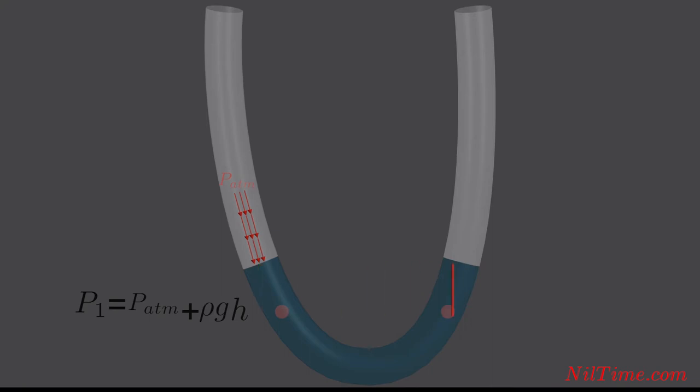The same principle applies to the right side of the tube. So the pressure at both sides is equal to each other.